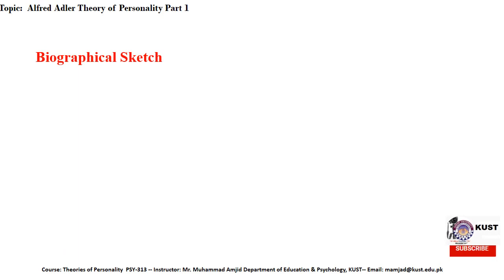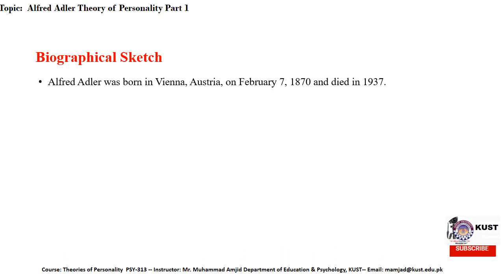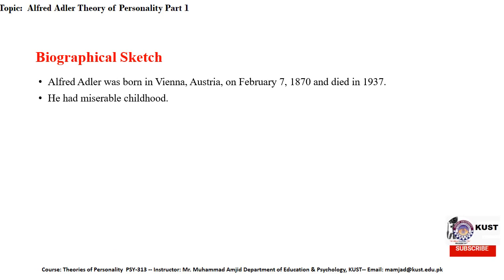First of all, we will discuss the biographical sketch of Alfred Adler. Alfred Adler was born in Vienna, Austria on February 7, 1870 and died in 1937. Alfred Adler had a miserable childhood because he suffered from a disease named rickets. Rickets is a skeletal disease caused by lack of vitamin D and calcium. People with rickets may have weak and soft bones, and that's why they cannot take part in any type of physical activity.